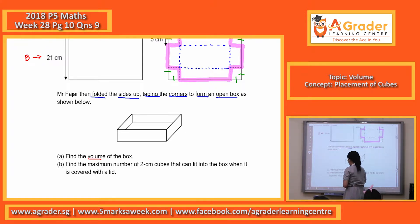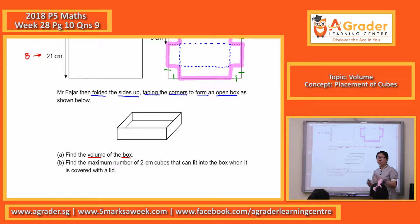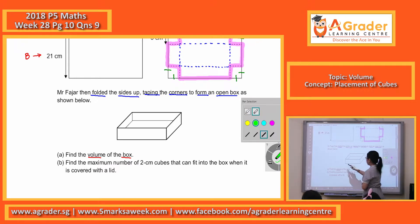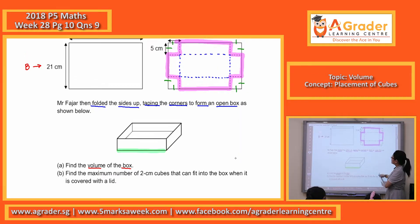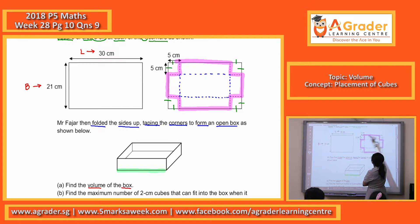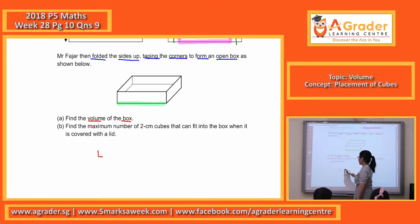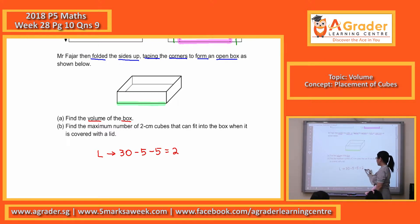You're supposed to find the volume of this box. If you find volume, what's the formula? So what is my length here? This side is 30. This side cut away means minus 5, and this side cut away means minus 5. So in terms of the length of the box: 30 minus 5 minus 5, you get 20.